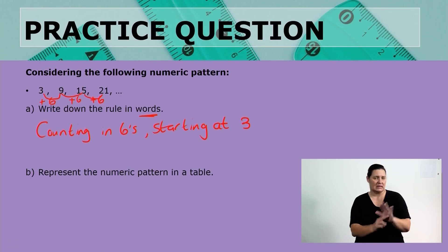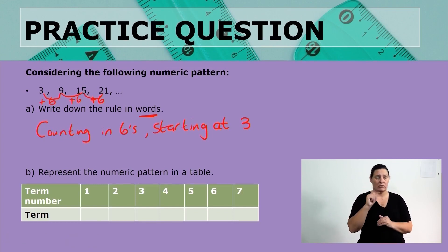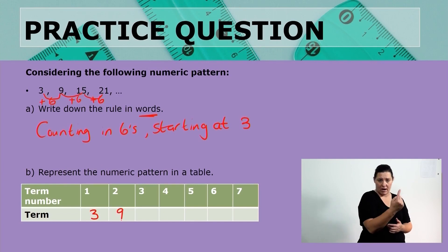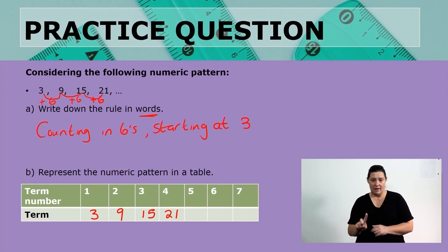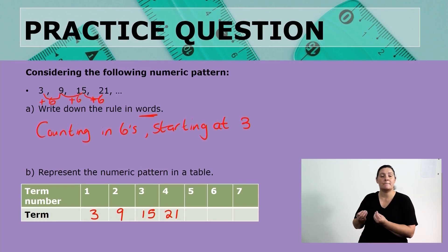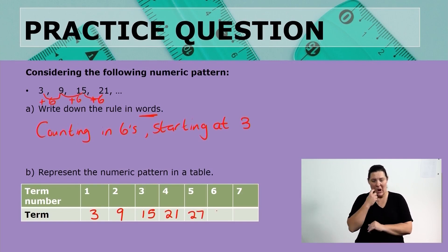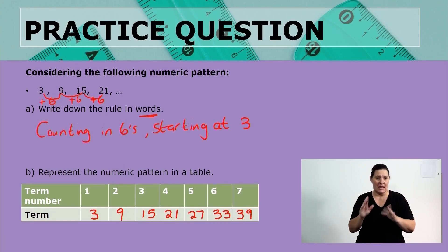So, let's try and represent this numeric pattern in a table. Looking at the table, we have the term number at the top. The term number just speaks to the position of the number — the first, second, third position — and the term itself will be the number in the pattern. So, we have 3 as the first term, 9 as the second, 15 as the third, 21 as the fourth. If I continue this pattern, counting in 6s, I will have 27, then 33, and then 39.